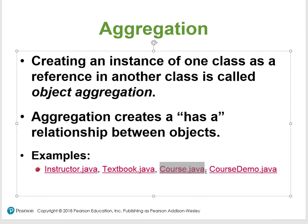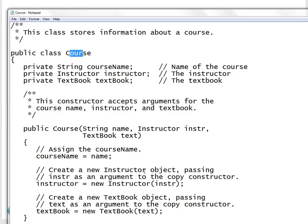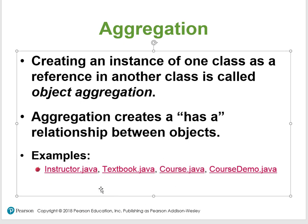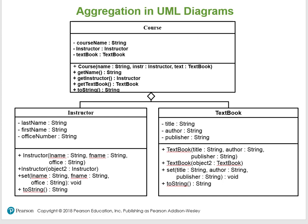This Course class has the Instructor and the Textbook both as fields. When you instantiate the Course, you are copying the actual object being passed across as the argument. In the UML, when you see a diamond, it means a 'has-a' relationship — the Course has a relationship with both the Instructor and the Textbook.